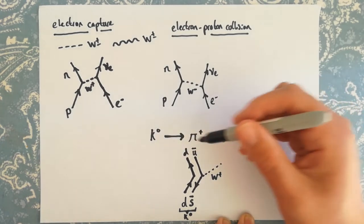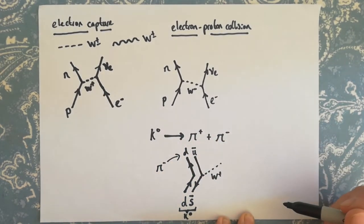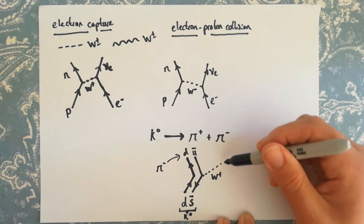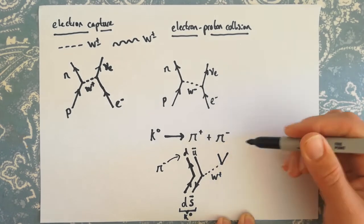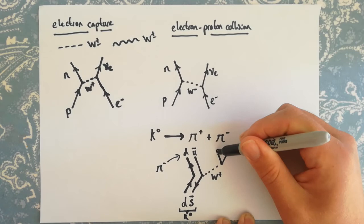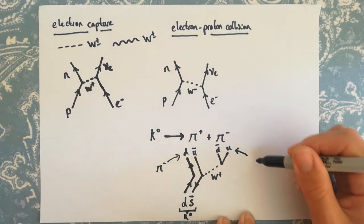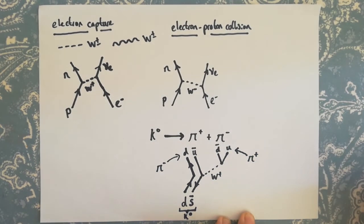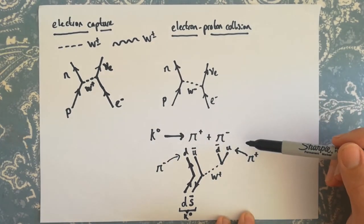And so up here we've got a down and an anti-up, which is, I've run out of space, that's our pi minus meson. So the W plus is then going to turn into an anti-up and an anti-down quark, and those two quarks bound together are our positive pi meson. So that's just an example of kaon decay.